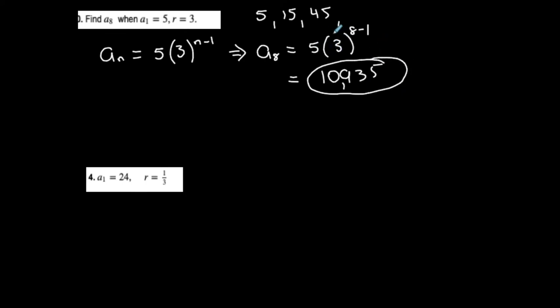Be careful with this because it's only the ratio, the common ratio that's being raised to the n-1. This happens before I multiply by a1. So just be careful with your order of operations.